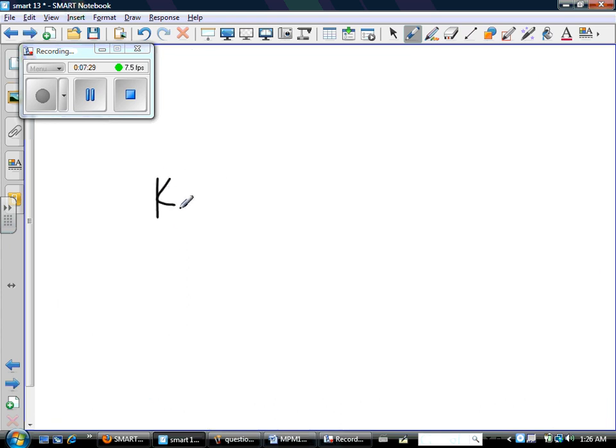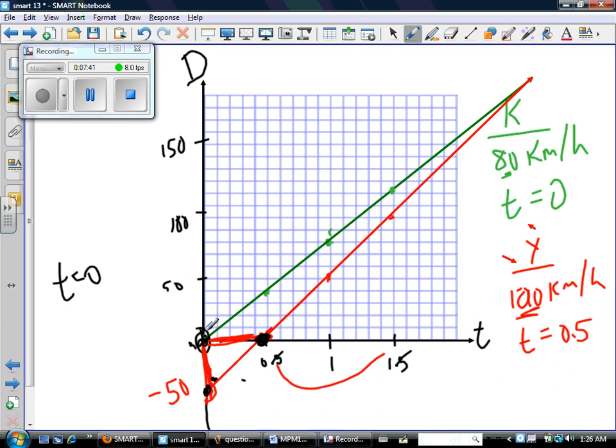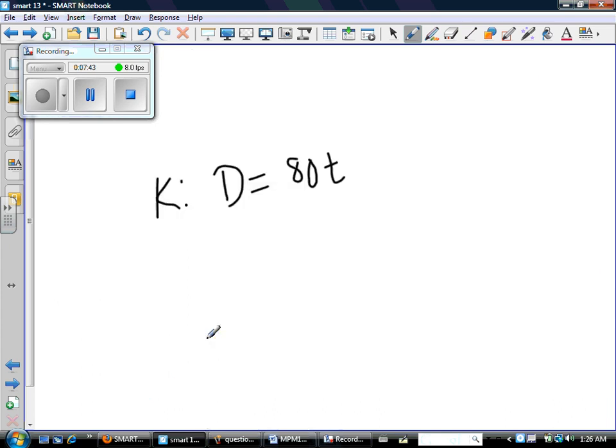So here's Kenji's equation. The distance that Kenji travels is dependent upon the time. For every one hour, Kenji goes 80 kilometers. And you can see that Kenji's starting point is right at zero. So I don't need to put plus anything because I don't write plus zero. So that's Kenji's equation with D in kilometers and T in hours.